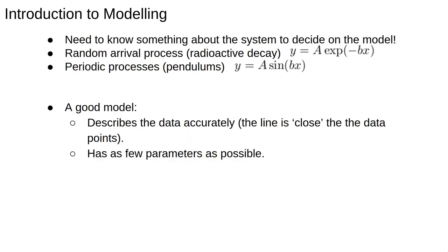Generally, knowing the correct model to fit requires knowing something about the system you're studying. Sometimes there are good reasons to use particular functional forms. For example, y = Ae^(-bx) is often used for random arrival processes, like radioactive decay. The form y = A sin(bx) could be used for periodic processes, like modelling the path of a pendulum.